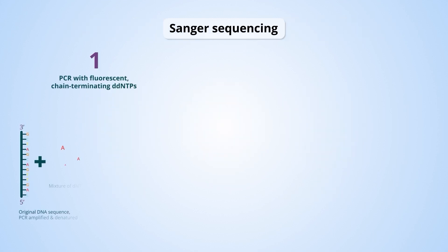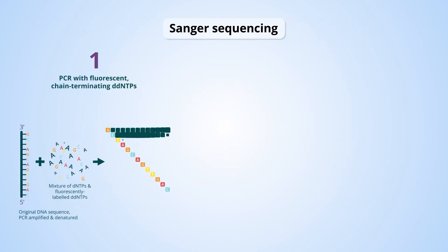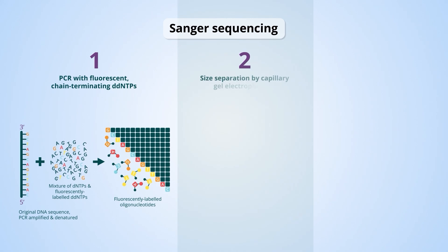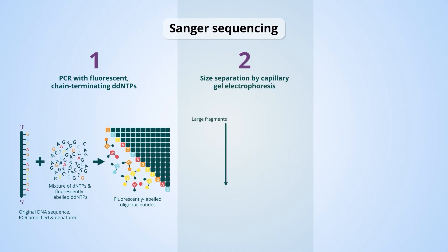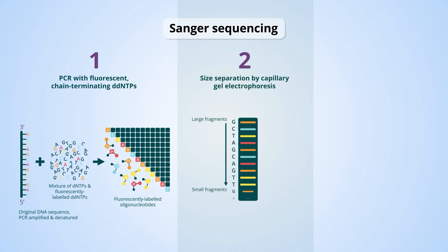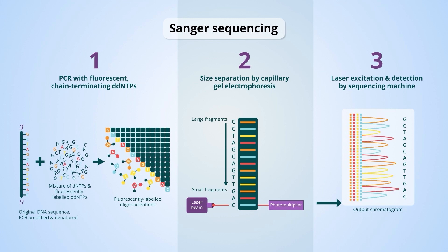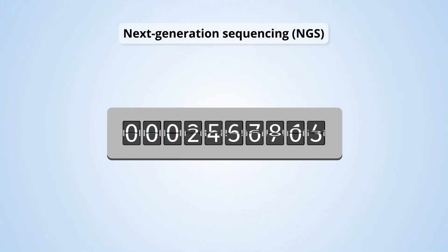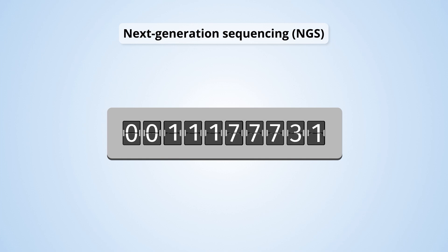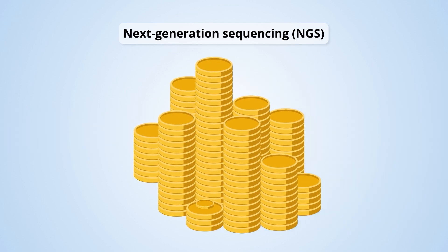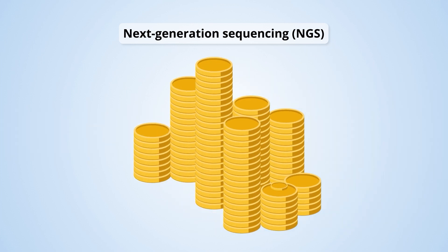Sanger sequencing was the first practical DNA sequencing method and, with a number of improvements, is still used today. However, while the Sanger method sequences a single DNA fragment at a time, NGS sequences millions of fragments simultaneously per run, enabling fast and relatively cost-effective sequencing.